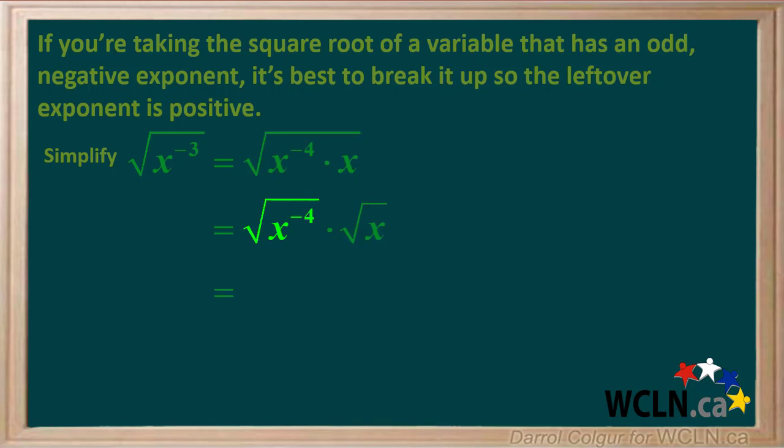The square root of x to the negative 4 is equal to x to the negative 2. The square root of x cannot be simplified, so we just bring it down here. So now we're left with the expression x to the negative 2 times the square root of x.